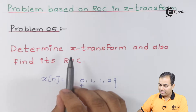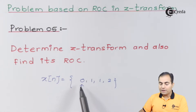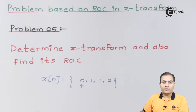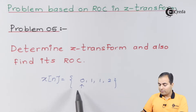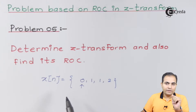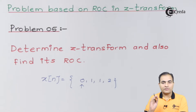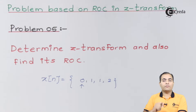Determine the Z-transform and also find its ROC, where the sample value is zero. The arrow is marked perfectly below zero, which means here we have the origin. The arrow is placed on the leftmost bit and all the samples are available on the right-hand side, which means the instances are positive.